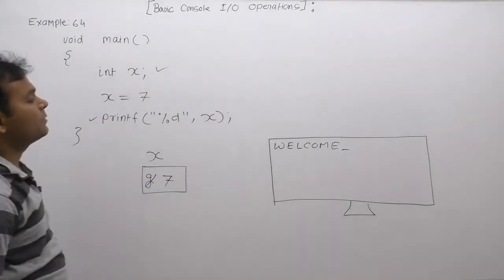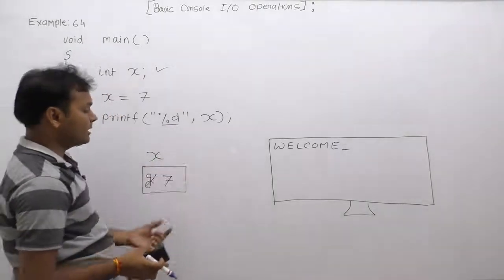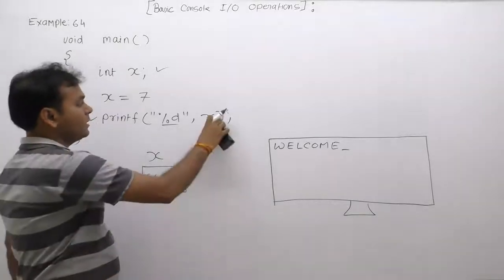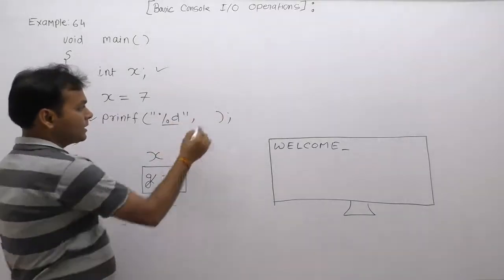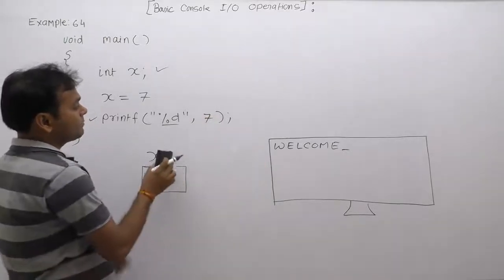In place of percent d, first x will replace with the current value of x. The current value of x is seven, therefore it will be replaced by seven. Next, the percent d is replaced with the corresponding argument value, which is seven.